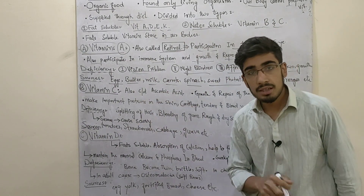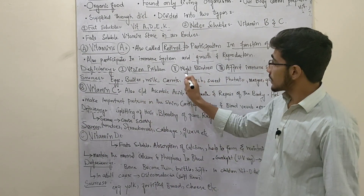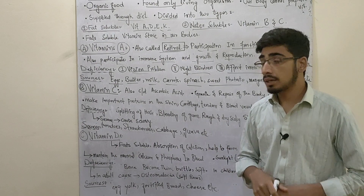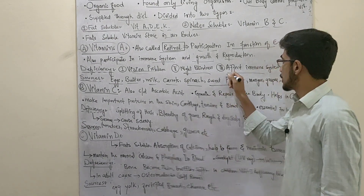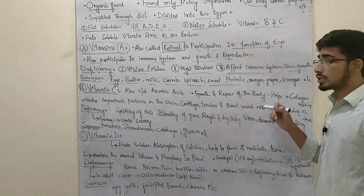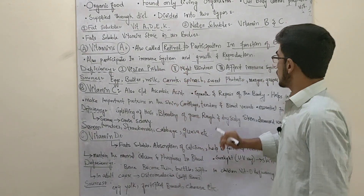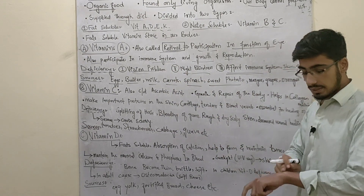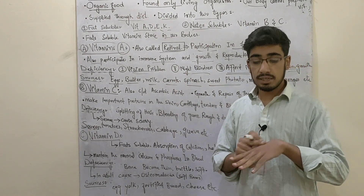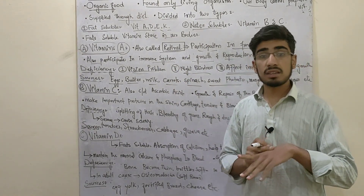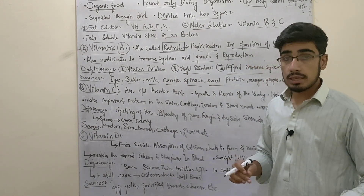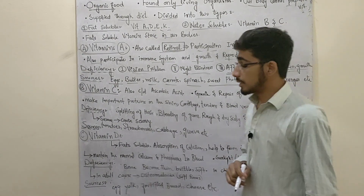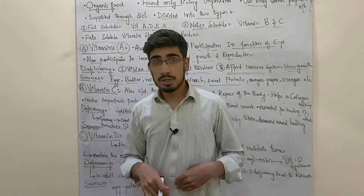Vitamin A deficiency may cause blindness. It also weakens the immune system and causes effects on the skin, including scaling. There are significant different effects including compromise of the immune system.